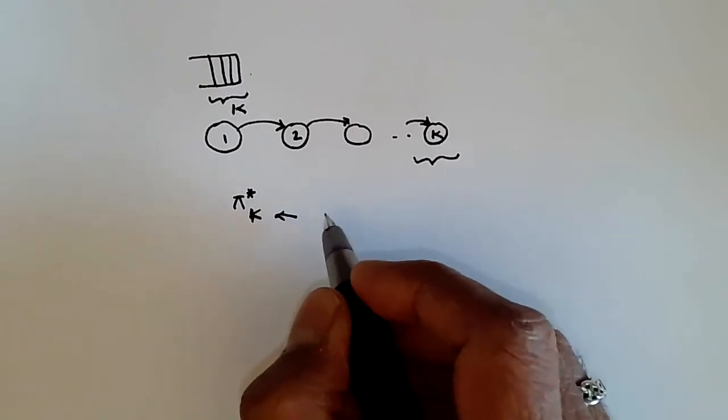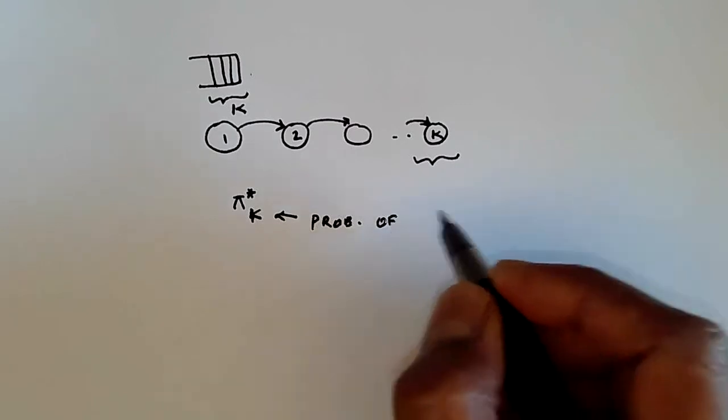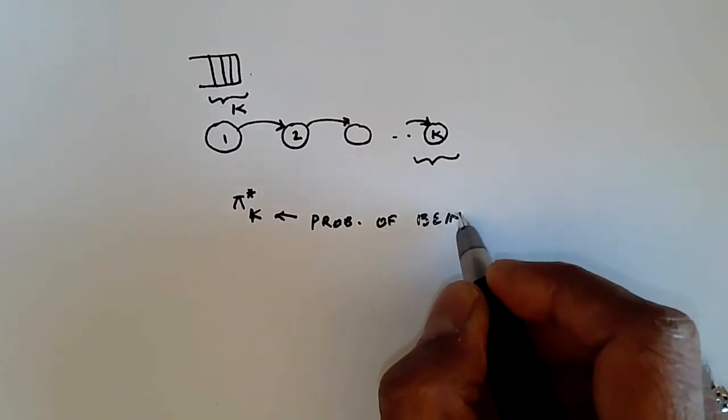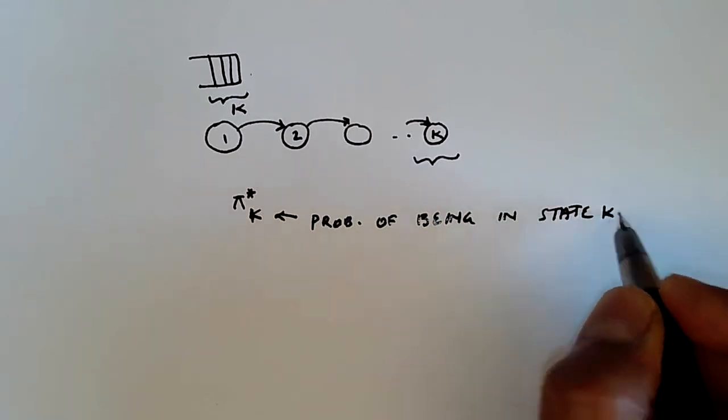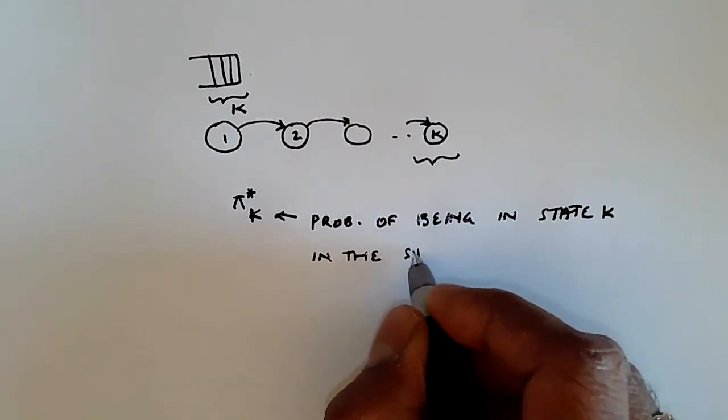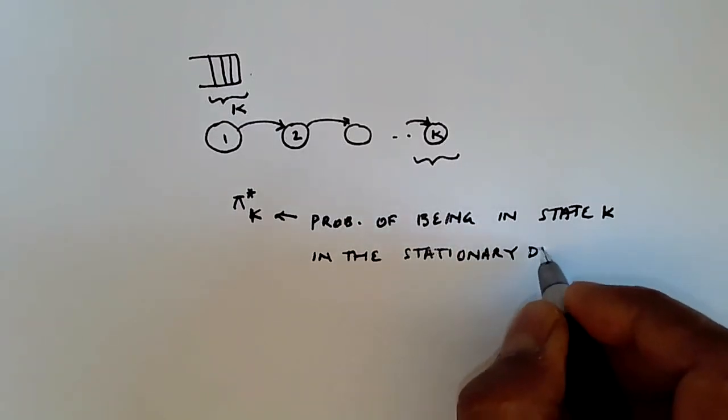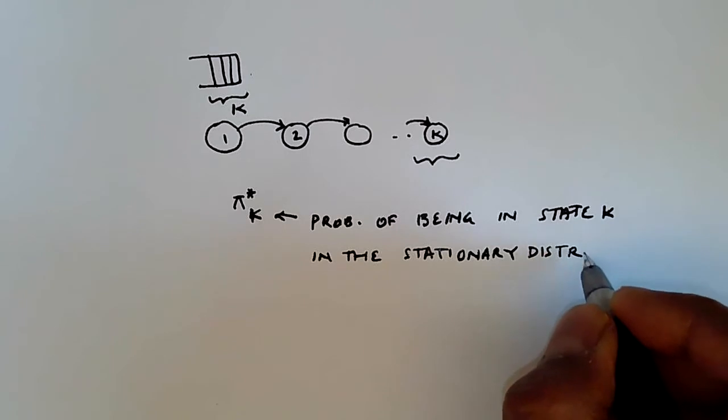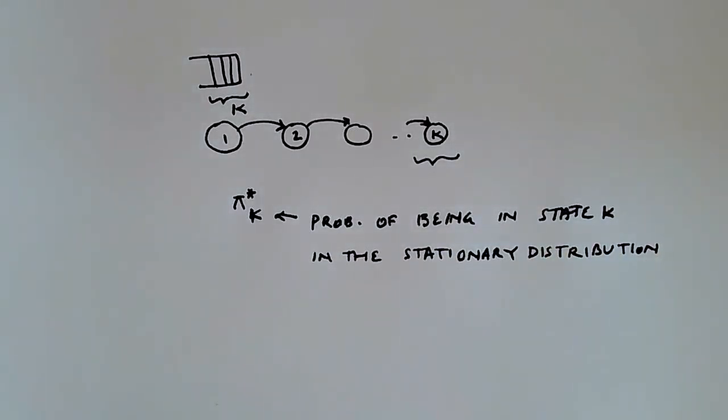being in state k in the stationary distribution. And why the stationary distribution? Because that's the expected value of the Markov chain into the future. Once it's been running for a while, then all of the things being equal, we expect the Markov chain to be in this particular state with this probability pi star k.